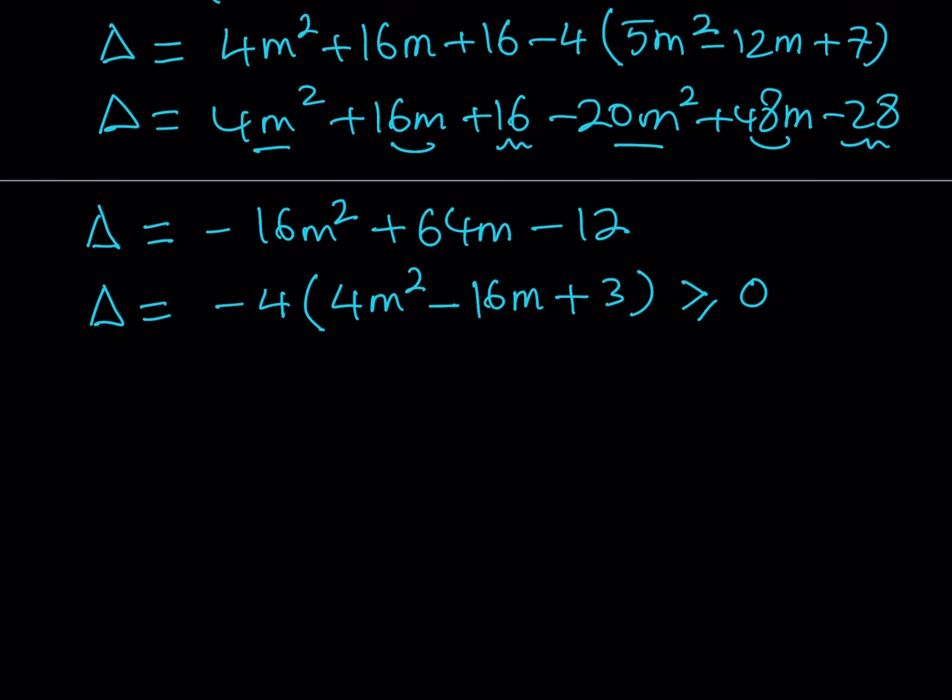And so we're going to be using this inequality to find the max and min values for m. Now, what is this supposed to mean? Well, we did get a quadratic inequality. So first of all, to get rid of the negative, let's go ahead and divide both sides by negative 4.